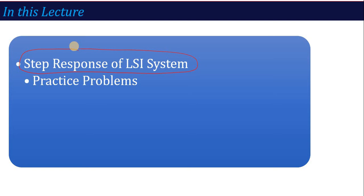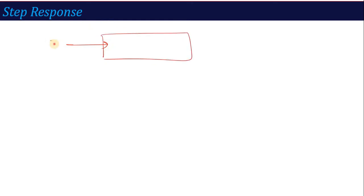How do we calculate the step response of an LSI system? If you remember, we represent the LSI system as: input x(t) goes into an LSI system with impulse response h(t), and output y(t) equals x(t) convolved with h(t). For step response, this input x(t) is the unit step function u(t), so y(t) equals u(t) convolution with h(t).